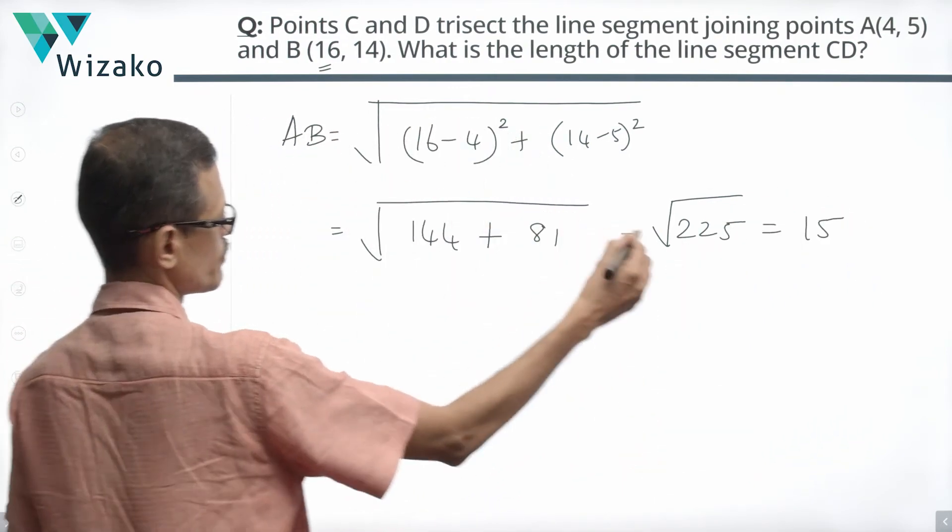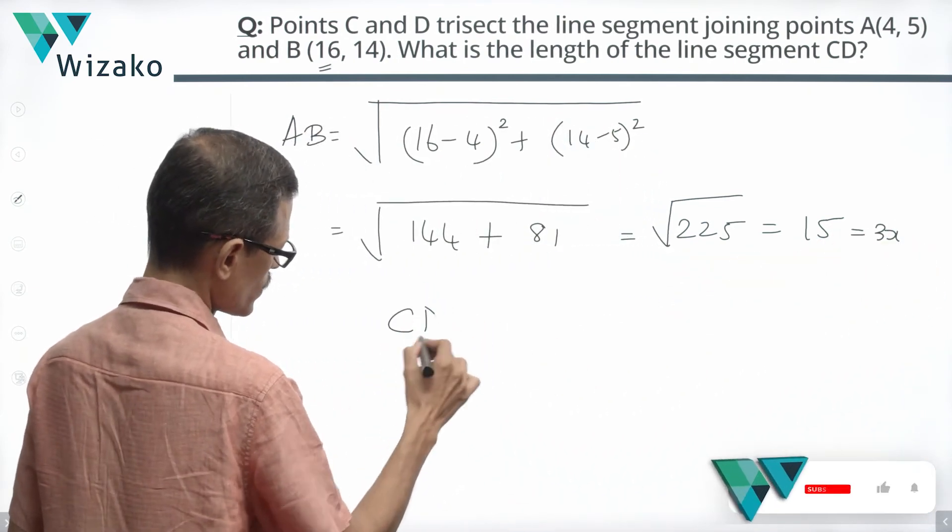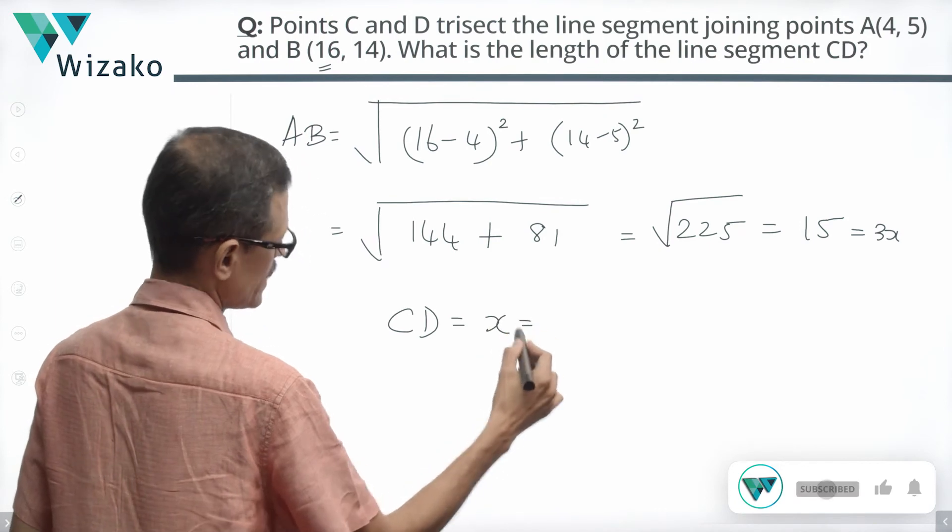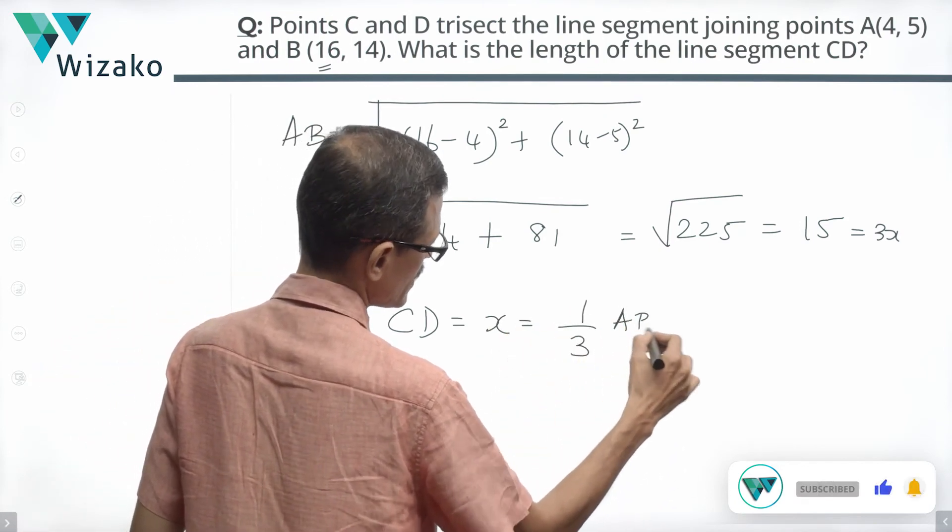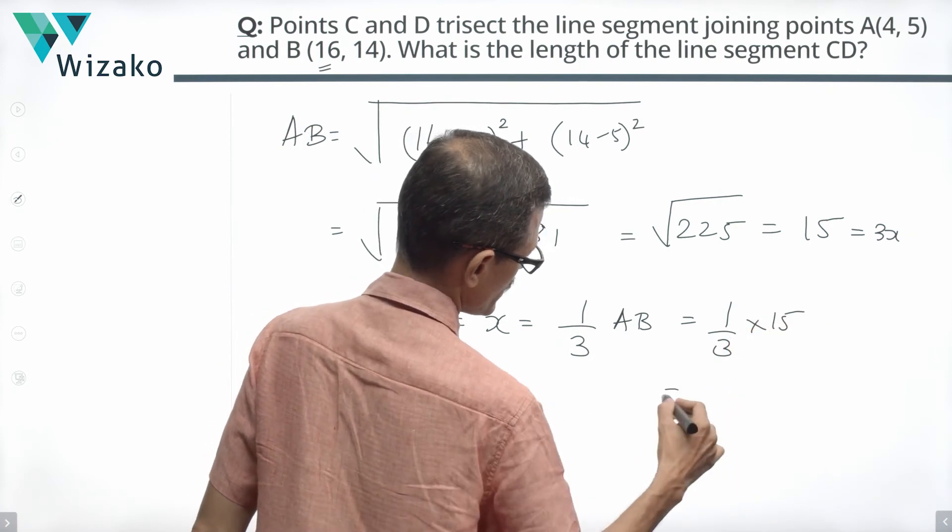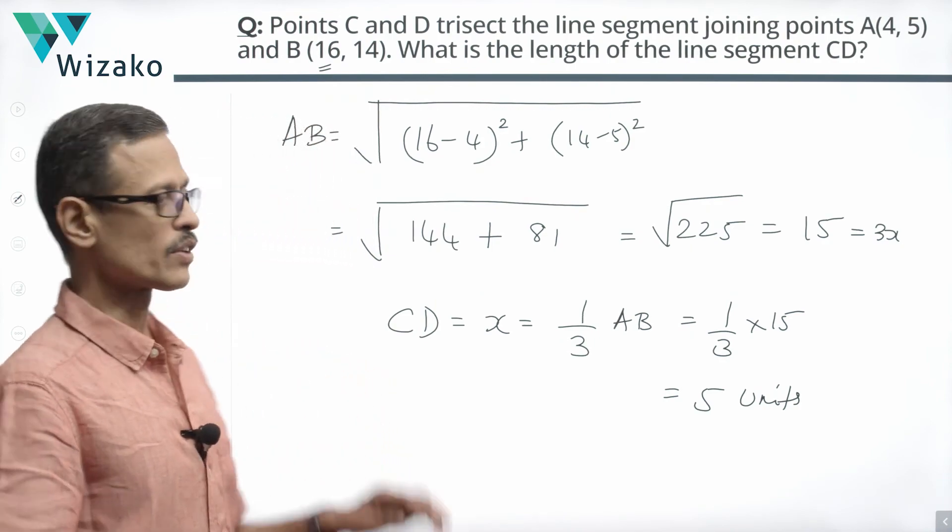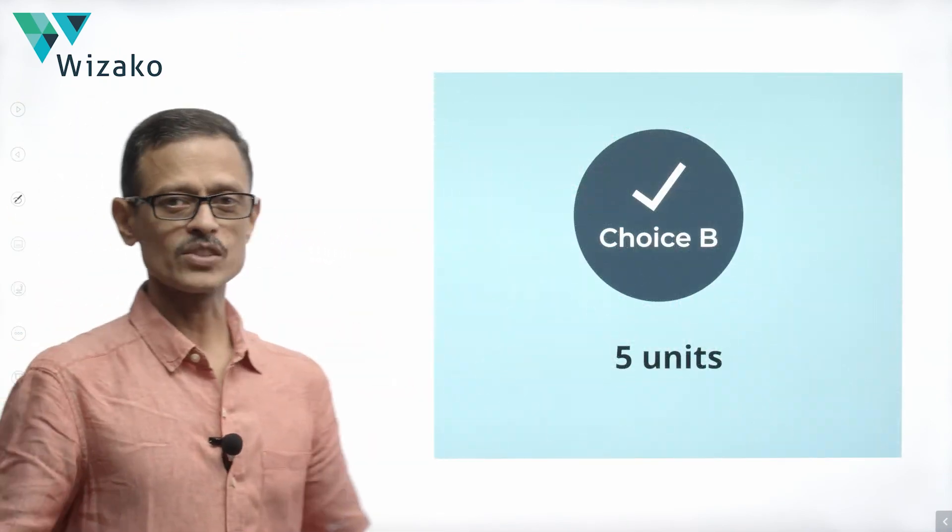AB is equal to 15 units which is equal to 3X. What we need to find out is CD which is equal to X which will therefore be equal to one third of AB. AB is 15 units. So one third of 15 is equal to 5 units. So length of line segment CD is equal to 5 units. Choice B is the correct answer to this question.